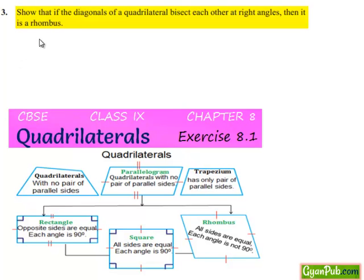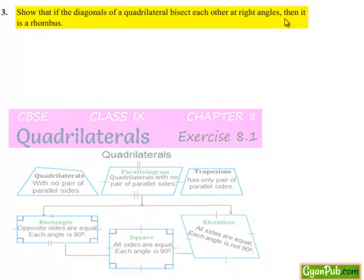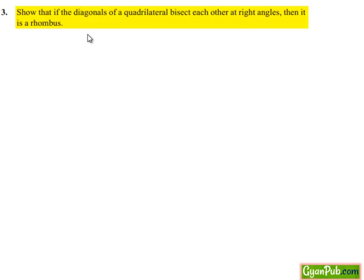Moving on to the third question: show that if the diagonals of a quadrilateral bisect each other at right angles, then it is a rhombus. Now moving on to the solution, let us note down the given information. It says that the diagonals of a quadrilateral bisect each other at right angles.